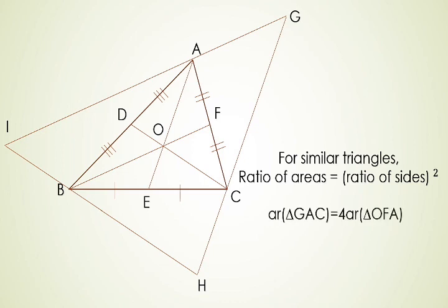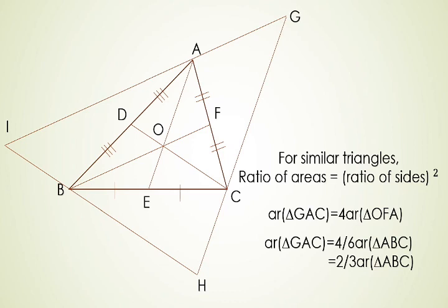Using this, we see that the area of triangle GAC is equal to four times the area of triangle OFA. Now we see that AE, FB and CD — the medians of the triangle — divide the triangle into six equal areas. So we can write triangle OFA is equal to 1/6 of area of triangle ABC, and here we get area of triangle GAC is equal to 2/3 of area of triangle ABC.